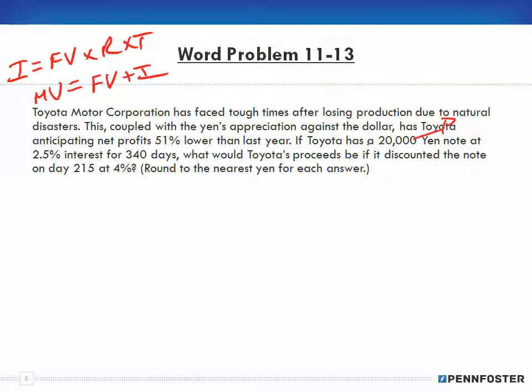If Toyota has a 20,000 yen note, that's principal or face value, at 2.5% interest, that's the rate, for 340 days, that's the time. What would Toyota's proceeds be if it discounted the note on day 215 at 4%?